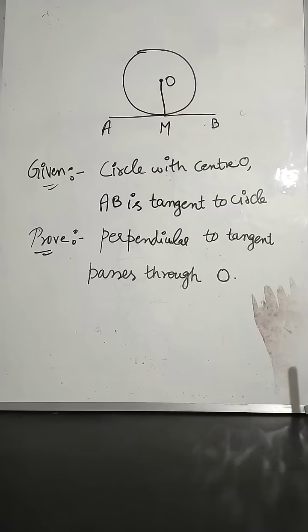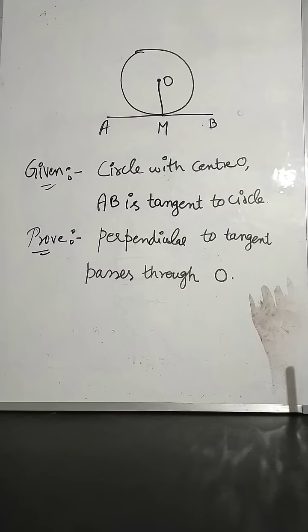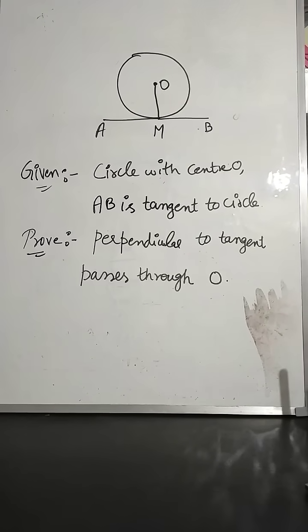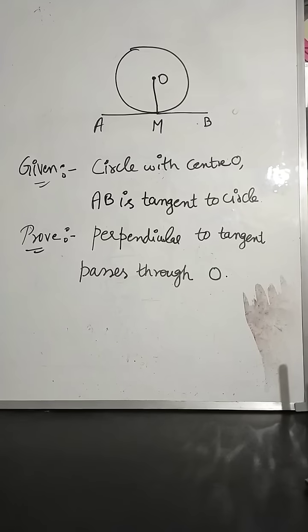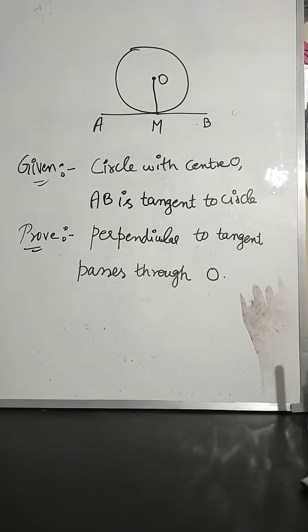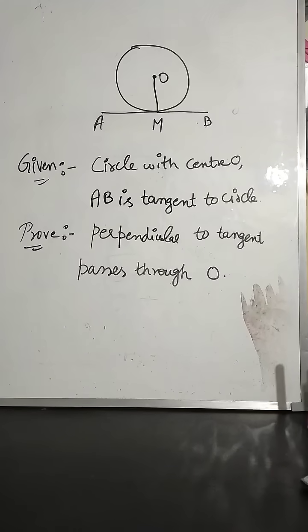Hello students, now the question is we have to prove perpendicular to the tangent of a circle passes through center O. Given circle with center O, perpendicular is also given OM and AB is tangent to the circle.